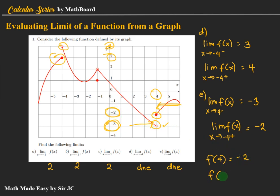For f of negative four, we consider x equals negative four. Since this point is shaded, the value is positive three. That is the difference between finding the value of the function at x equals something and evaluating the limit as x approaches something.